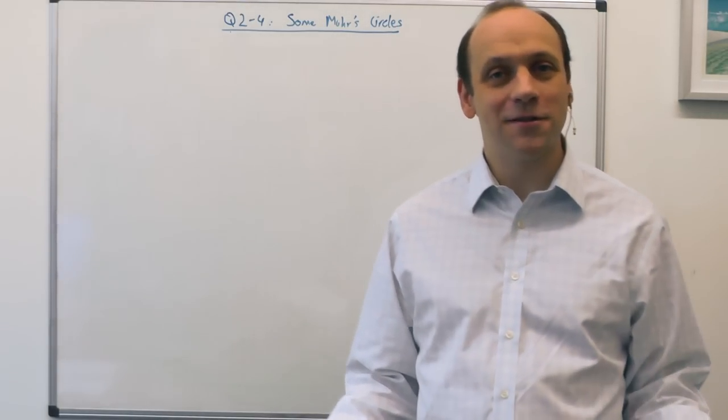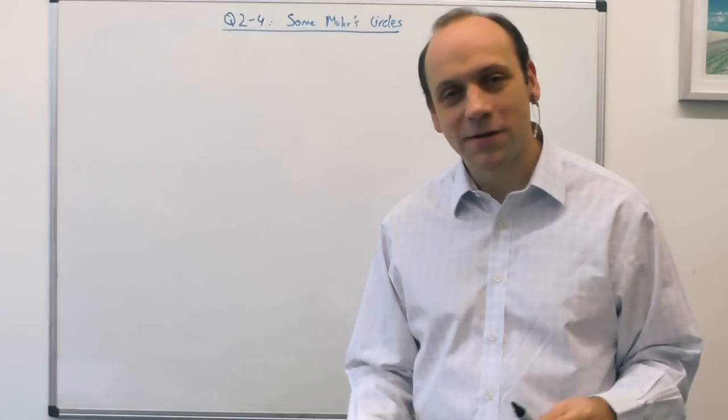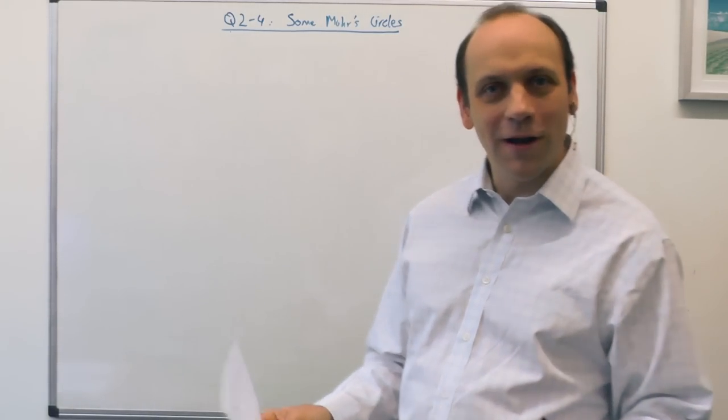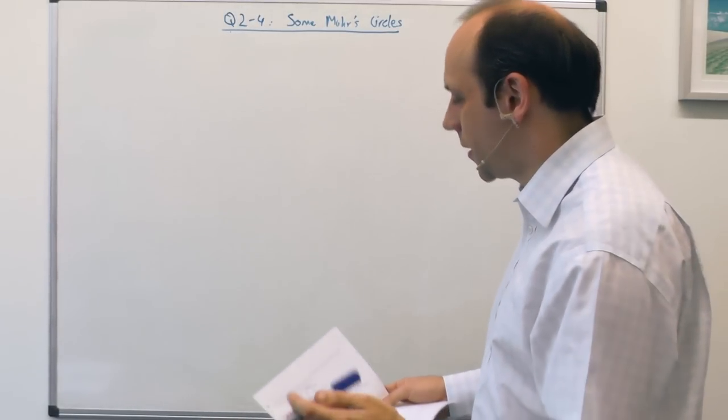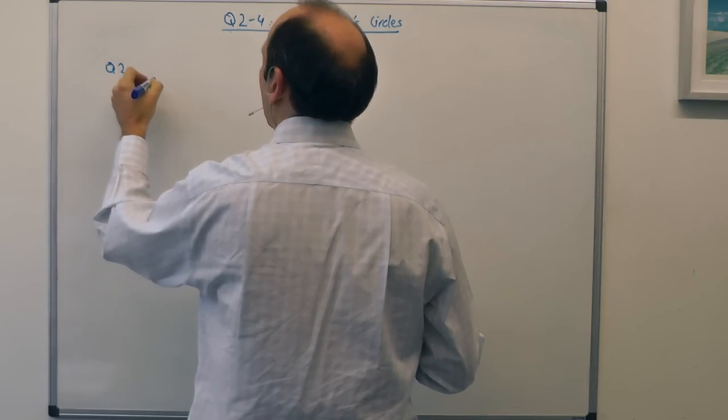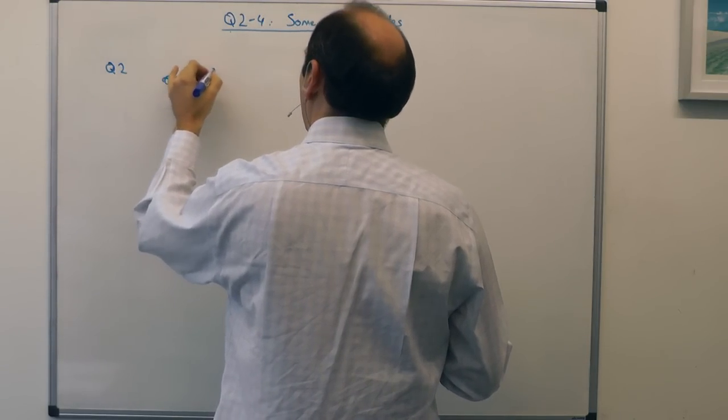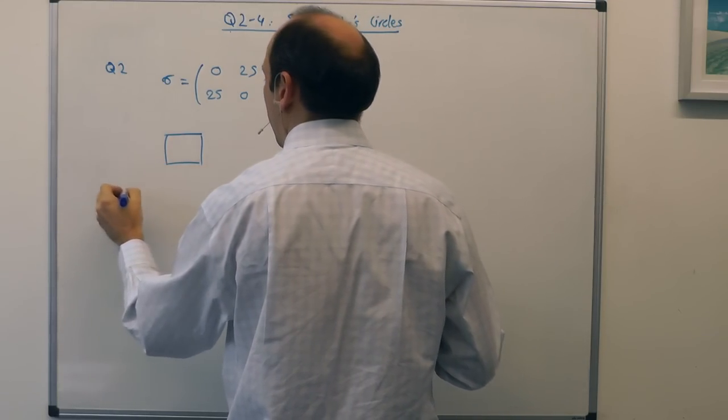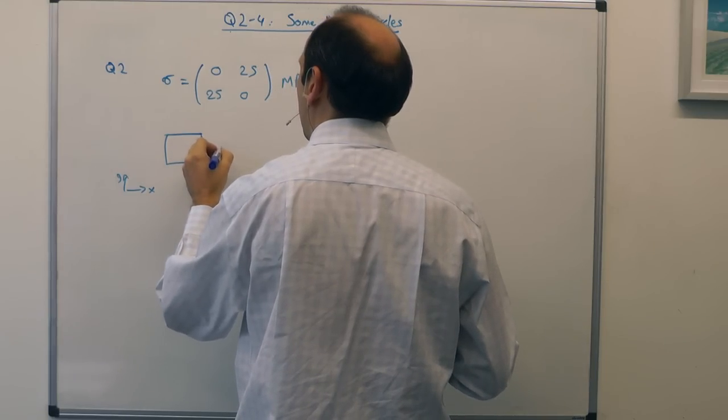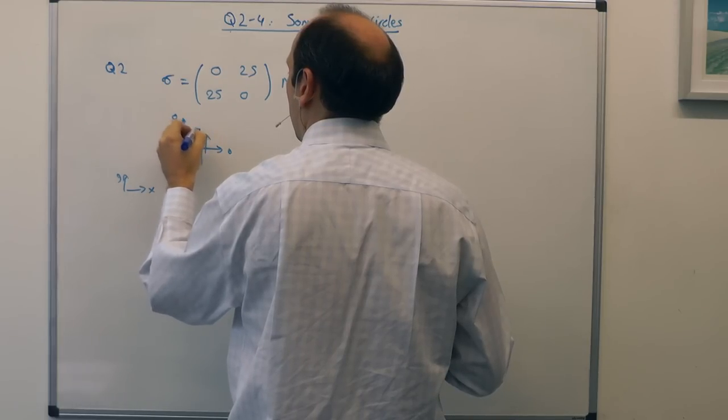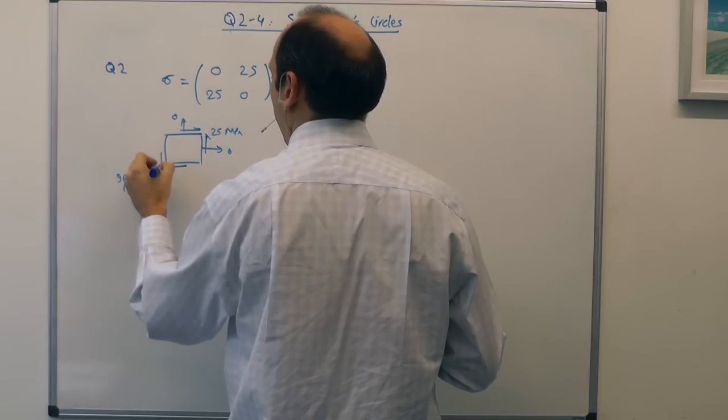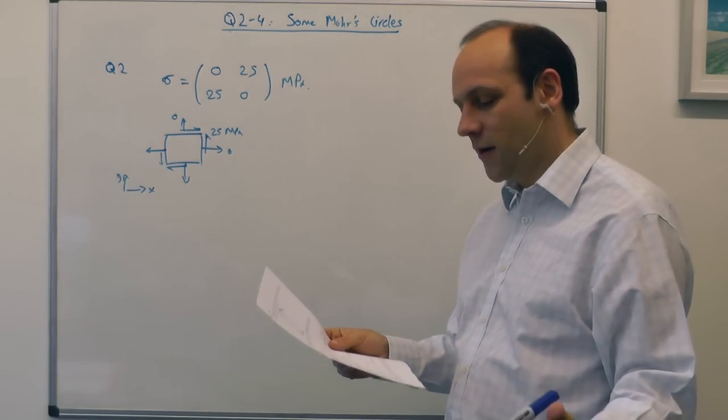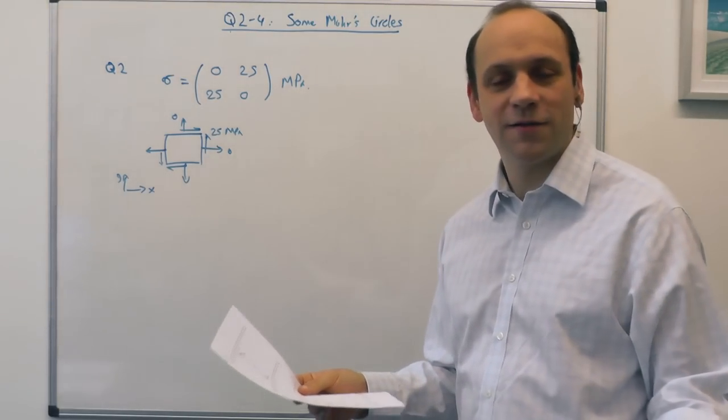So questions two to four are simply some Mohr's circle problems to have a go at and solve. And they build up to more and more complex starting off stress tensors. They're all 2D. And it's just a case of working those through, working through the different sorts of scenarios we can have. So the first scenario, question two, is a stress state of pure shear. So that is our little elemental square. Draw some axes, has stresses here of 0 and 0 and a shear stress here of 25 MPa. That's our little elemental square. And the question is, find the principal stresses and the maximum shear stress. What's the angle between the plane of maximum shear and the principal stresses and the principal axes?